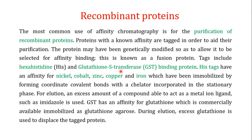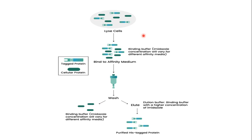Another important tag used in recombinant proteins is the glutathione S-transferase (GST) tag. GST has an affinity for glutathione, which is commercially available immobilized as glutathione agarose. You use glutathione as a ligand to separate recombinant proteins tagged with GST — the GST interacts with the immobilized glutathione, separating your desired protein from the mixture. During elution, excess glutathione is used to displace the tagged protein.